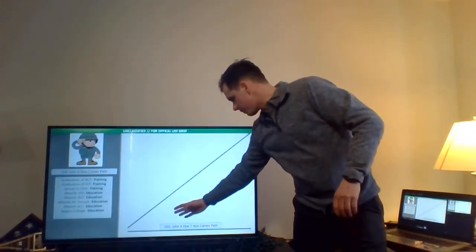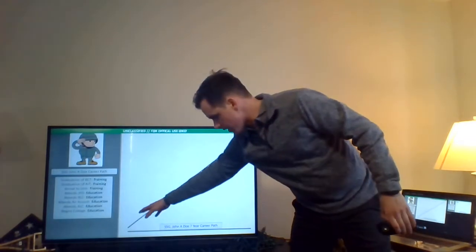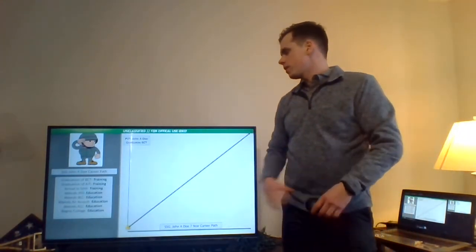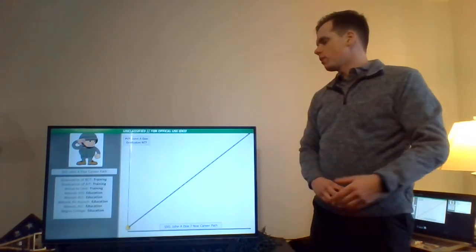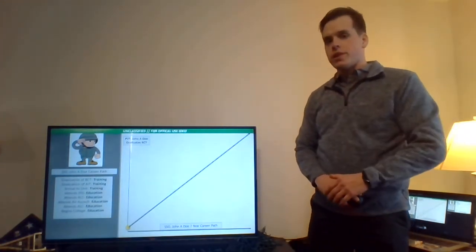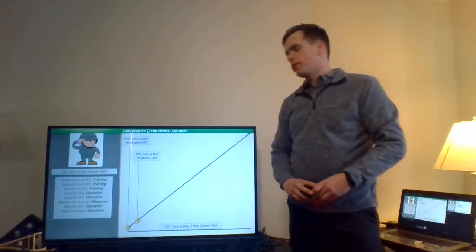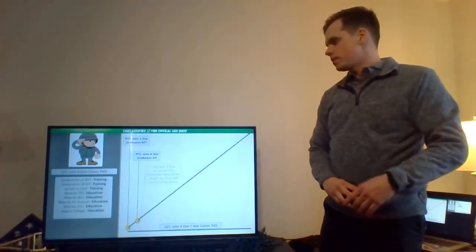So as we can see, we have a seven-year career path. This is his career and here we're going to go. First thing he's going to do, he's going to graduate BCT. Private John A. Doe graduates BCT. That's his first training event in the Army. Next, he's going to go to AIT and he's going to graduate. That's his second training event that he's had since he's been in the Army.